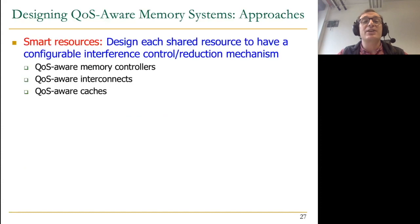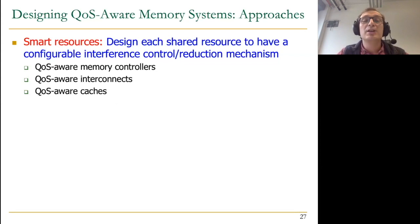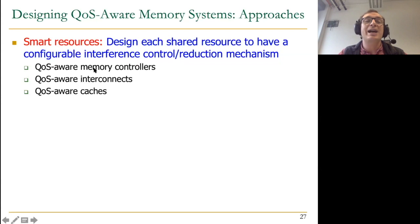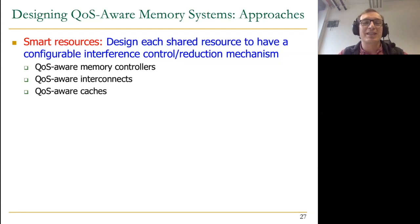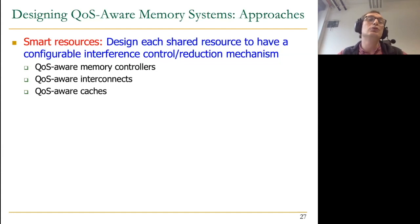There are two approaches to designing quality-of-service memory systems. One is 'smart resources,' where you have many shared resources — memory controllers, interconnects, and caches — each designed to have configurable interference control and reduction, basically a memory QoS mechanism. The memory controller has it, the interconnect has it, caches have it — you combine all of them and hope they coordinate nicely. Usually they don't. Memory controller may prioritize one thread while caches prioritize some other thread at the same time, and as a result you may actually lose overall efficiency and performance.